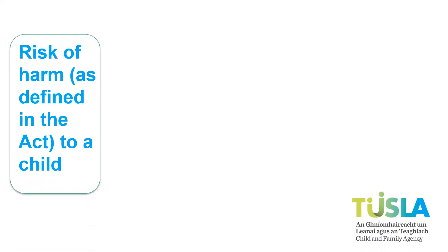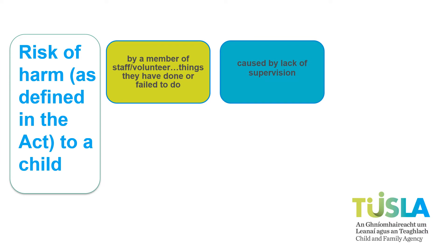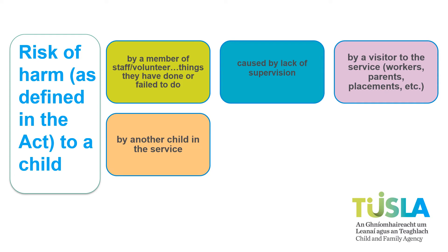Some general areas that it might be useful to think about include: the risk of harm, as defined in the Children First Act, of a child by a member of staff or volunteer — from things they have done, for example, hurt a child, or failed to do, such as not reporting a concern. The risk of harm caused by a lack of supervision. The risk of harm caused by a visitor to the service, like workers, parents, or students on placement. The risk of harm by another child in the service.